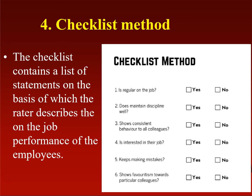The fourth traditional method is the checklist method. There are a number of statements related to the job the employee is performing. Against each statement, it is marked yes or no. If a particular statement is positive in the worker, it is marked present; if absent, no is marked. The total score is then calculated and a rank is given to the employee.